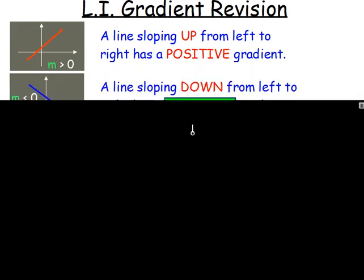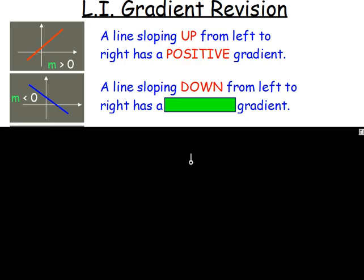Let's say it wasn't going up. Let's say it was going down. Then what would happen to that? Well, yeah, it's not a positive gradient. It would be a negative gradient. So m, your gradient would be less than 0.